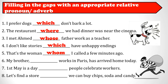Number six: My brother who works in Paris has arrived home today. Number seven: First of May is a day when people celebrate workers. Number eight: Let's find a store where we can buy chips, soda and candy.